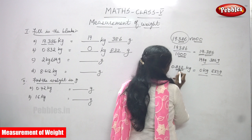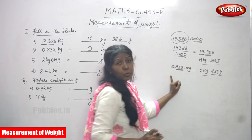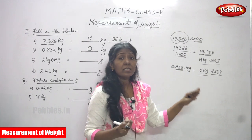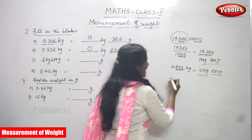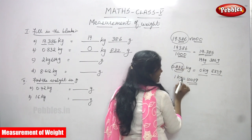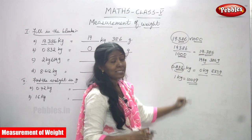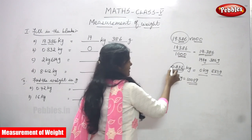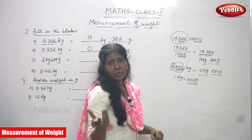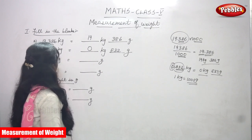After the decimal point there are three digits, so those three digits fall under gram. The number before the decimal is kilogram. Since 832 is less than 1000, it is less than one kilogram, so there is no whole kilogram — only zero kilogram and 832 gram. That is the right answer.